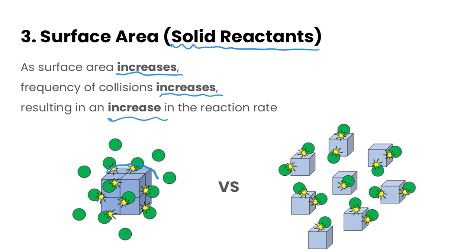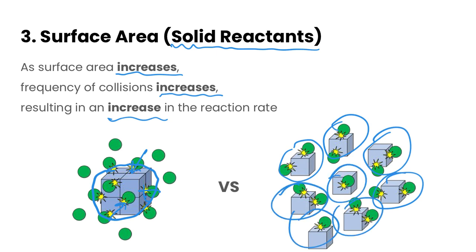You can see here if we have this big cube of a solid here and all the green particles are colliding with it, there's a lot less surface area for it to collide with the solid that we're reacting with, versus if we have smaller granules of it, then we get far more collisions happening here. So it's better instead of using a big chunk of a solid to use granules of that solid instead.